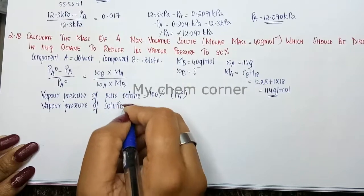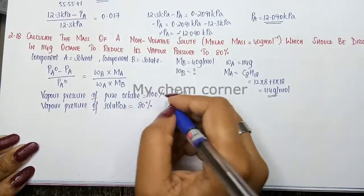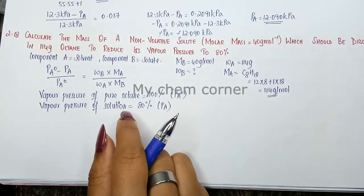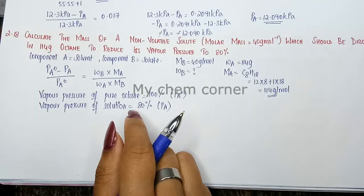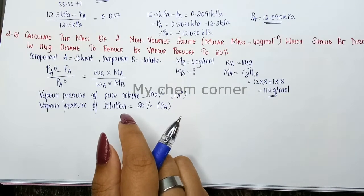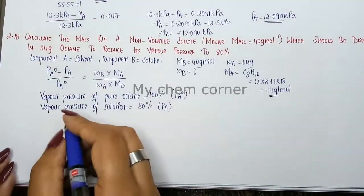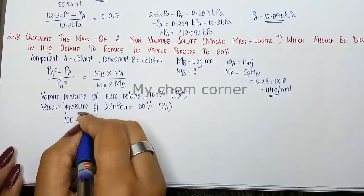Now you know all these values. All we have to do is substitute it back into the equation. So PA0 is 100 minus PA 80 divided by PA0.